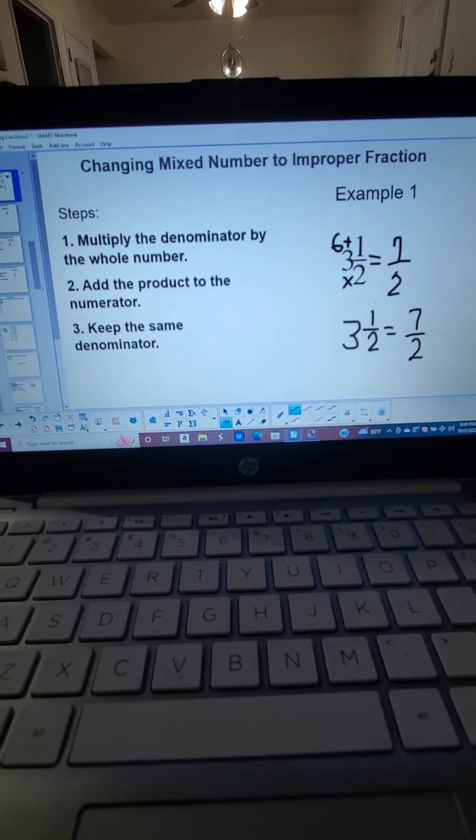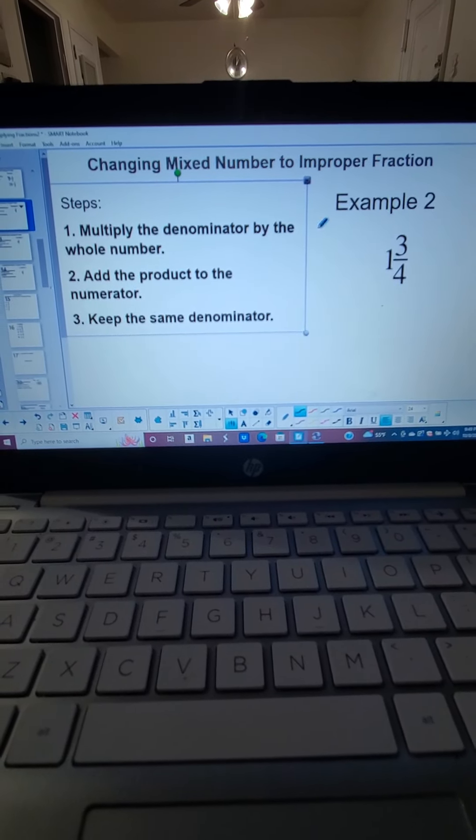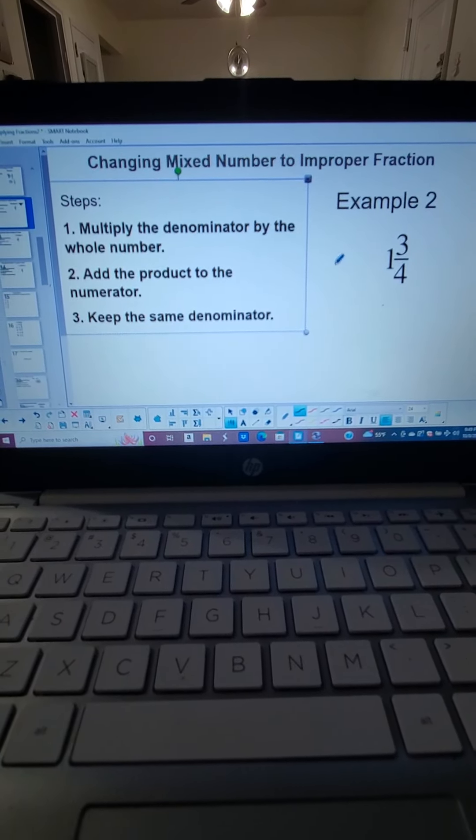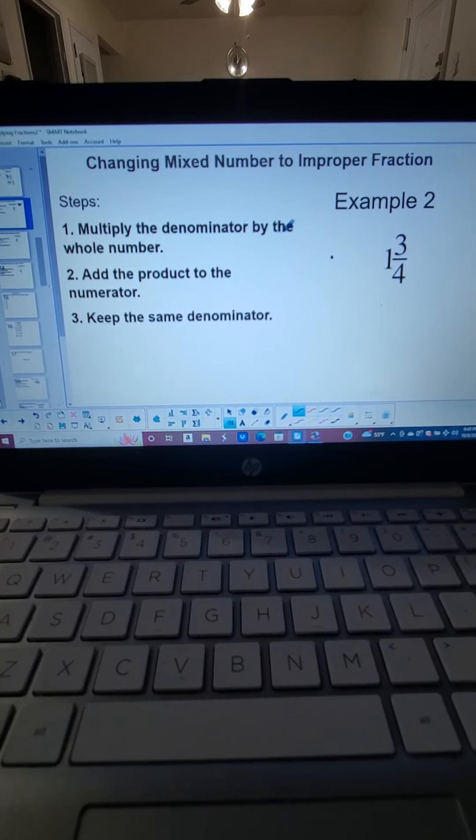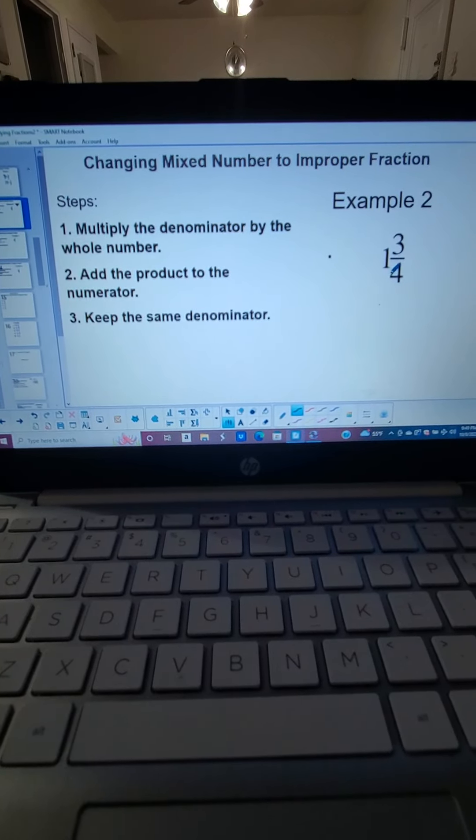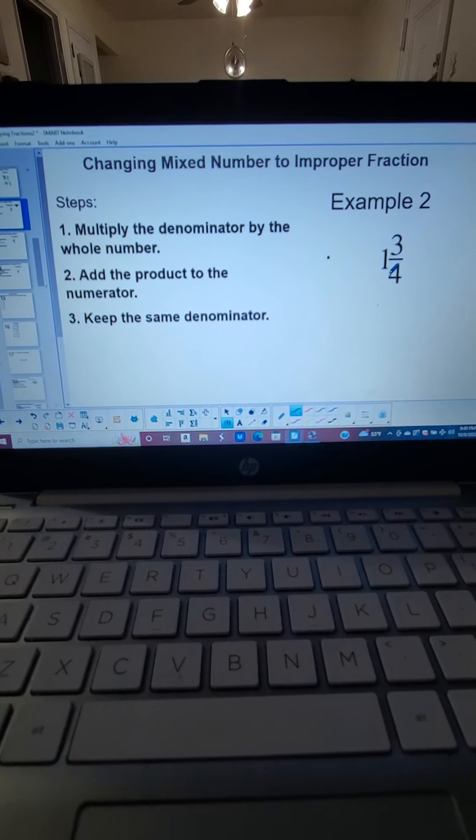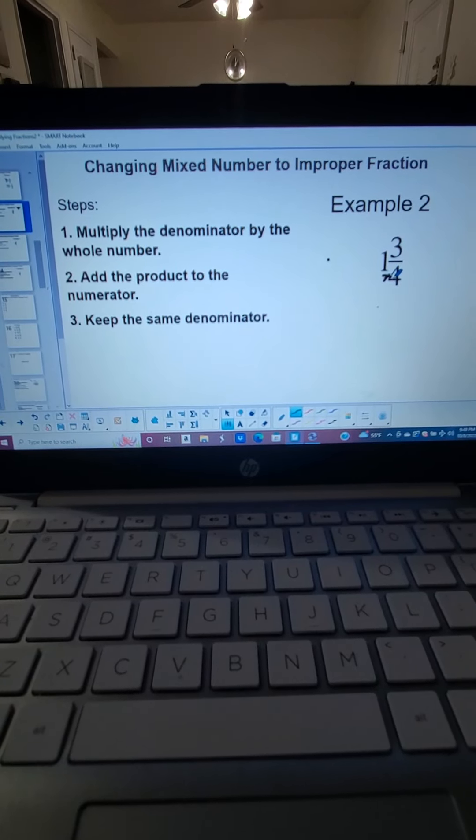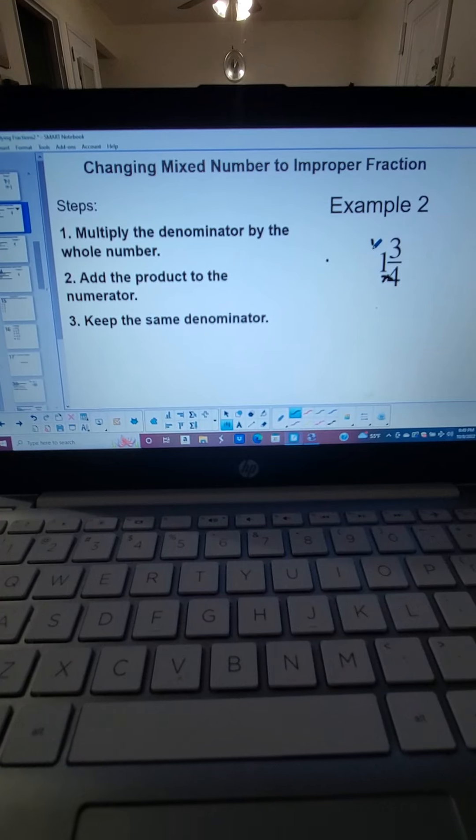Let's go to the next example. We are going to follow the same steps. First, we multiply the denominator by the whole number. So in this case, 4 times 1 is 4.